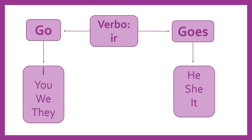Vamos a utilizar en estas oraciones el verbo ir, que en inglés sería go. Pero tenemos dos tipos de este verbo, aunque significa lo mismo: go y goes. Cada uno se va a utilizar con ciertos pronombres. Go se utiliza con I, you, we, they. Y goes con he, she, it.